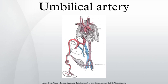The umbilical artery is a paired artery that is found in the abdominal and pelvic regions. In the fetus, it extends into the umbilical cord.